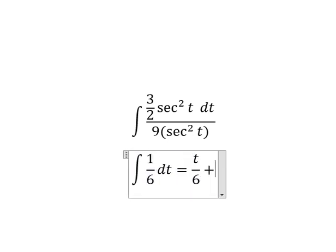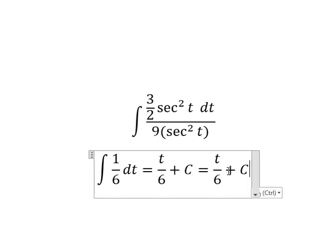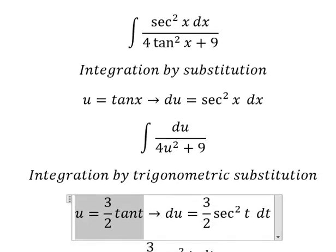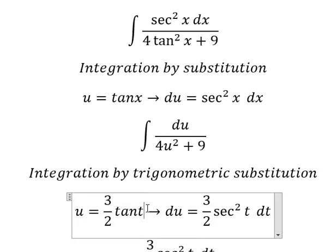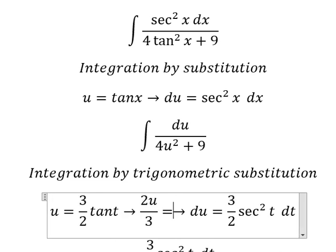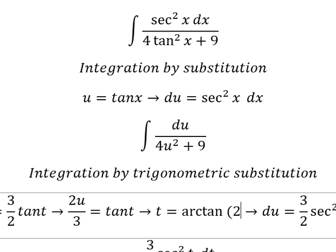And I will put t is this one. So we divide both sides by three over two and we have two u over three equals tan t. So t equals arctan of two u over three.